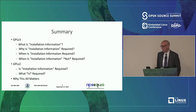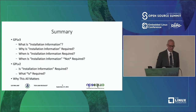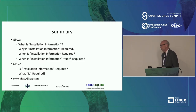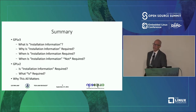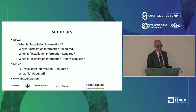I want to talk about two different licenses. First of all, GPL v3, which is the most recent version of the GPL license, was issued in 2007. There is a particular provision in it related to a thing called installation information — what it is, why it's in there, what you have to do with regard to that provision, and what you don't have to do with regard to that provision.